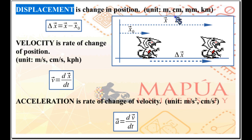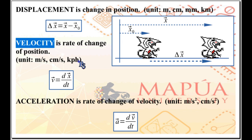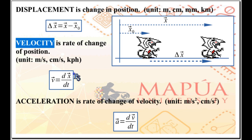Metric prefixes include centi, milli, kilo, and so on. If we take a look at how fast the position of the object is changing, we have what is referred to as the velocity of the object — the rate of change of position. Calculus defines rate of change of position such that velocity V equals a very small change in position divided by a very small change in time: dx/dt. So velocity V equals dx/dt, which is also the differentiation of x with respect to time.